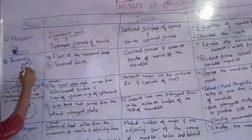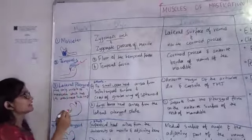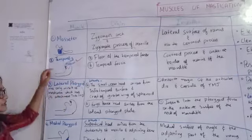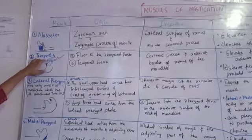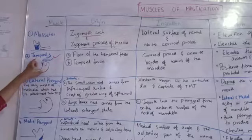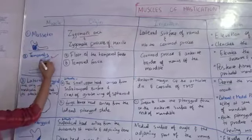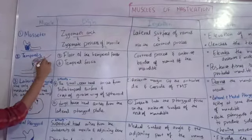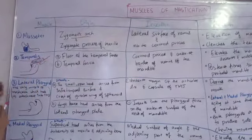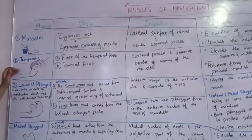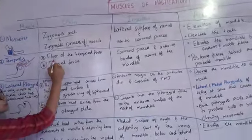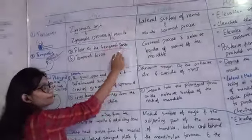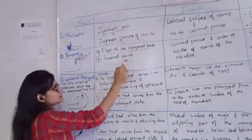The second muscle is Temporalis. Temporalis is a fan-shaped muscle. It has three parts: anterior, middle, and posterior. The anterior is at the top, the middle is in the center, and the posterior is at the back. From its name we can tell it originates from the temporal region — from the temporal fossa on the temporal bone.